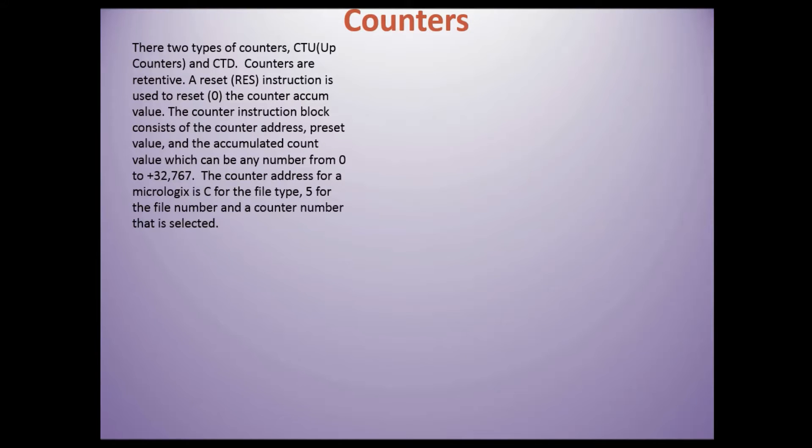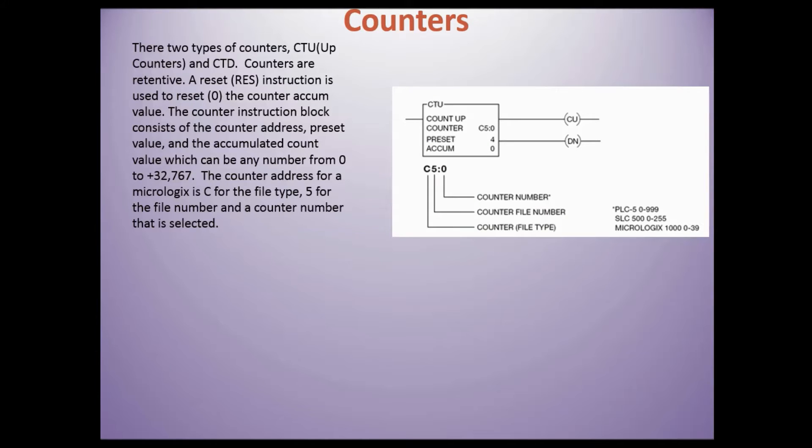There are two types of counters: CTU, the up counter, and CTD, the down counter. Counters are retentive. A reset instruction is used to reset the cumulative value to zero. The counter instruction block consists of a counter address, a preset value predetermined by the operator or programmer.